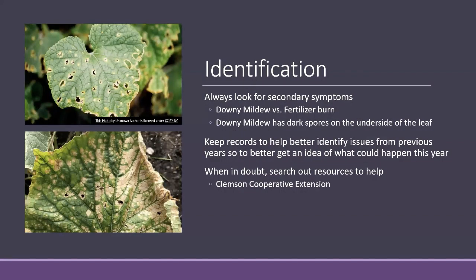Always look for secondary symptoms. One picture I have actually shows two different problems: the top is downy mildew — you have to look at the bottom of the leaf for it — and the bottom is fertilizer burn, where someone left fertilizer on the leaves instead of scraping it off. Keep records in gardening. This helps determine if you fertilized recently, if you've been watering correctly, or if there's been a lot of rain. In future years, you can look back and notice patterns. When in doubt, reach out to external resources.